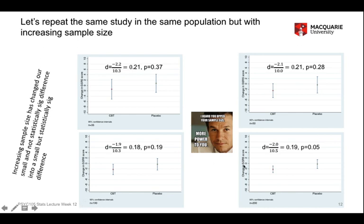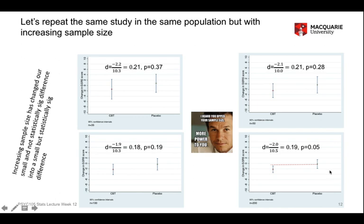Finally, I conduct a very large study with 200 individuals per arm. Cohen's D is minus 0.20, quite similar to the third and fourth studies, but the p-value is finally 0.05 — right on that magic threshold of significance. The numerator hasn't changed, but the denominator has become so small, the uncertainty so small, that I can just about conclude I should reject H0. This also holds up visually: the mean reduction in the placebo group lies outside the 95% confidence interval for CBT, and vice versa.